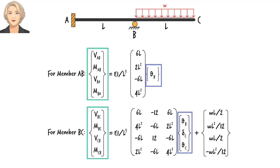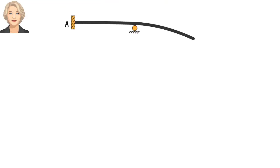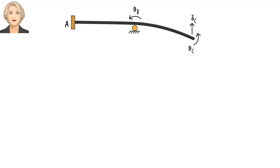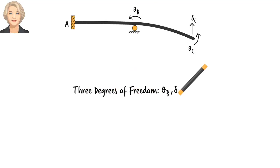Now let's turn our attention to joint equilibrium equations. For this beam, we have a total of three unknowns: theta_B, delta_C, and theta_C. We say that the beam has three degrees of freedom. We need three equations — one equation per degree of freedom — for finding the unknowns.